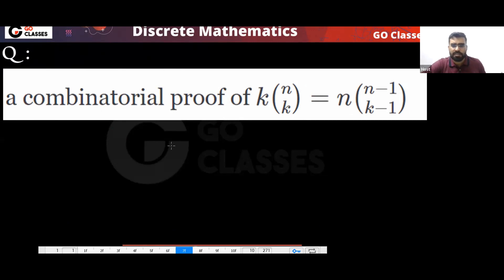You are expert now, so just try. I have already told you how to create a story. Can you try to create a story to prove this? The idea is very simple. When you see C(N,K), it will come to mind that from N people you are selecting K people.